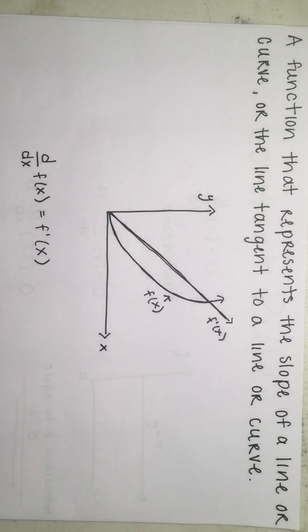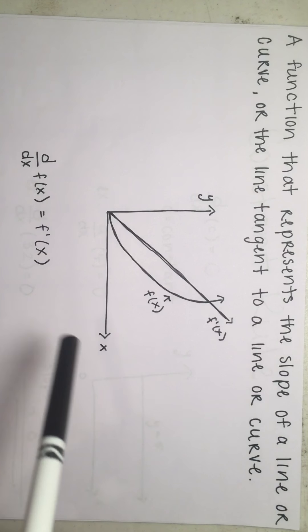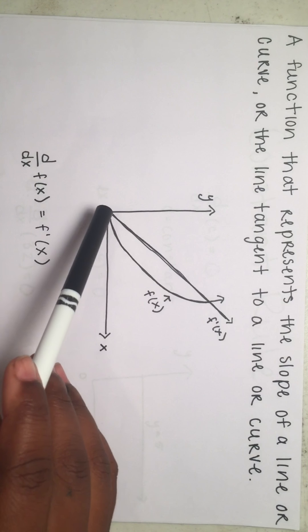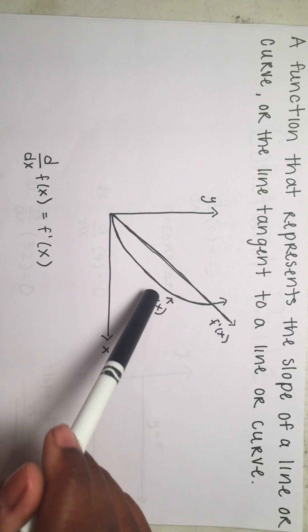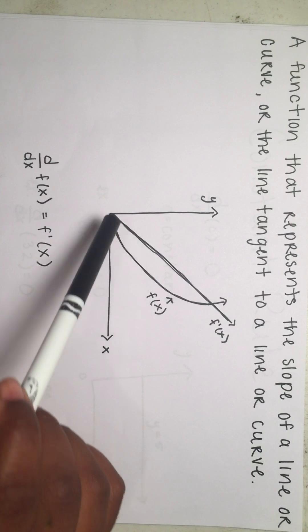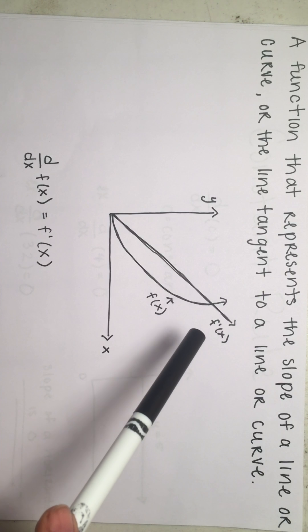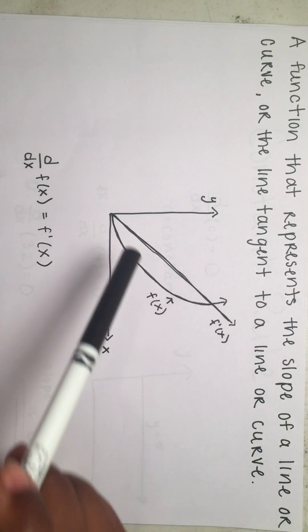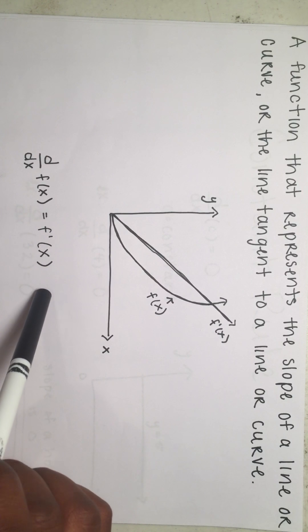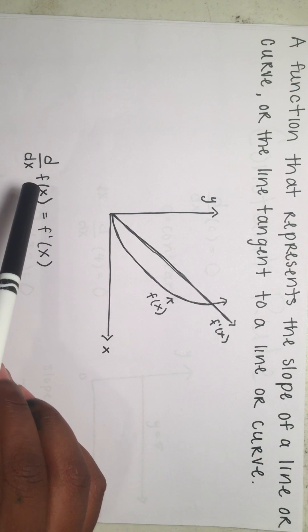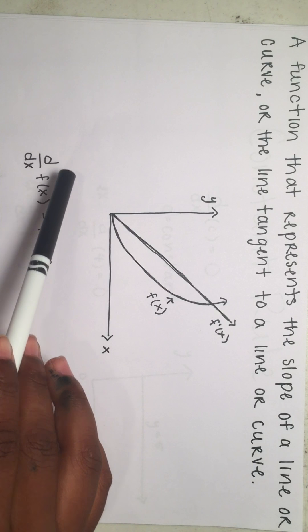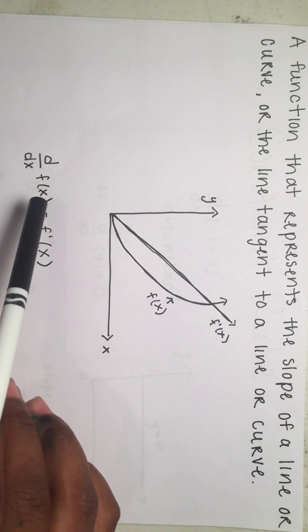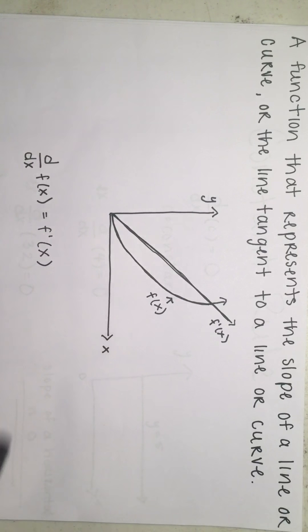A derivative is basically a function that represents the slope of a line or curve, or the line tangent to a line or curve. In our x and y coordinate plane, let's say we have this curve labeled f of x. The derivative of this curve is going to look like a straight line, labeled f prime of x, which is the derivative of f of x. Another way to write f prime of x is d over dx of f of x, which is the derivative of f of x with respect to x.